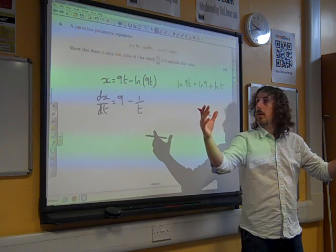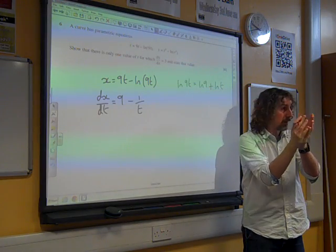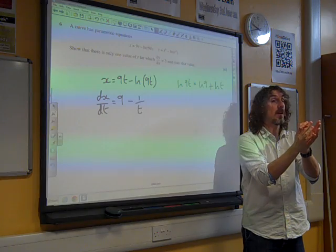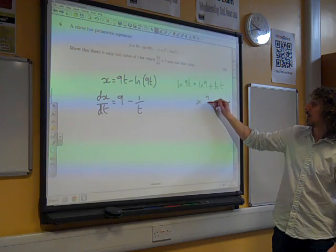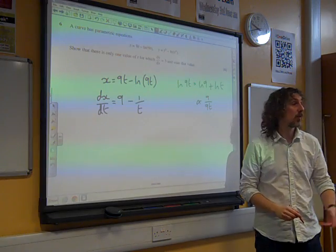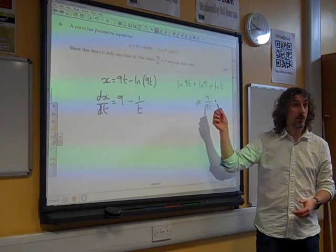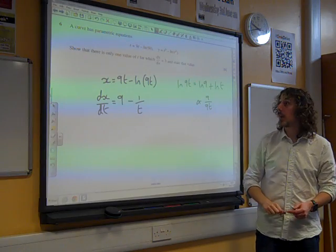The other way you could think about it is as a kind of chain rule thing. If you differentiate ln(something), you get 1 over the something, and then multiply by the derivative of the inside bit. If you differentiate 9t, you get 9. So we could also think of it as 9 over 9t, which cancels down to 1 over t. Either way you attack it, you get that as your answer.